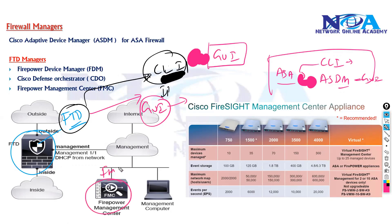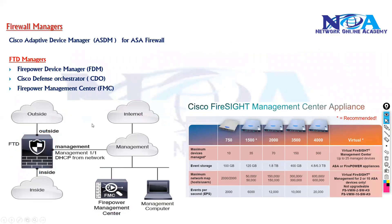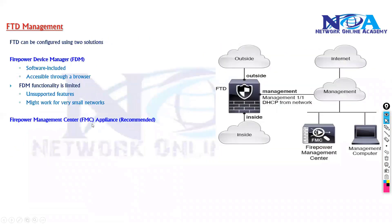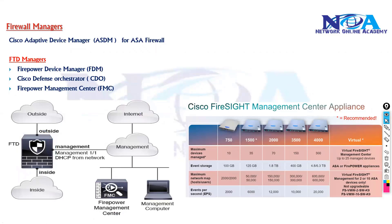That external device is called FMC — Firepower Management Center — which we'll be using primarily. Apart from that, you can also use FDM or CDO (Cisco Defense Orchestration), but these two are kind of limited. I'll give an overview of these options, but here we'll be using FMC for managing your Firepower devices or FTDs.